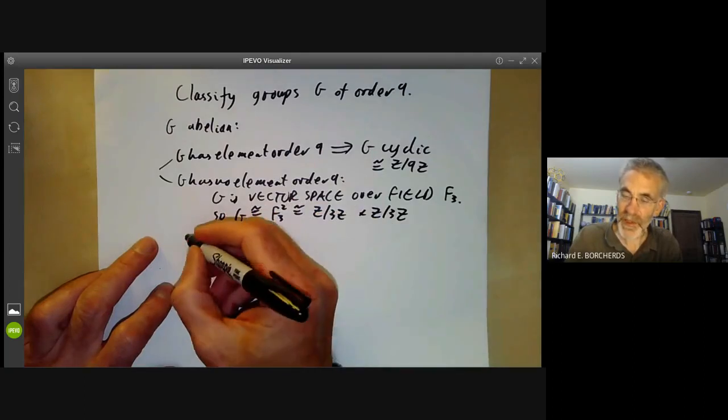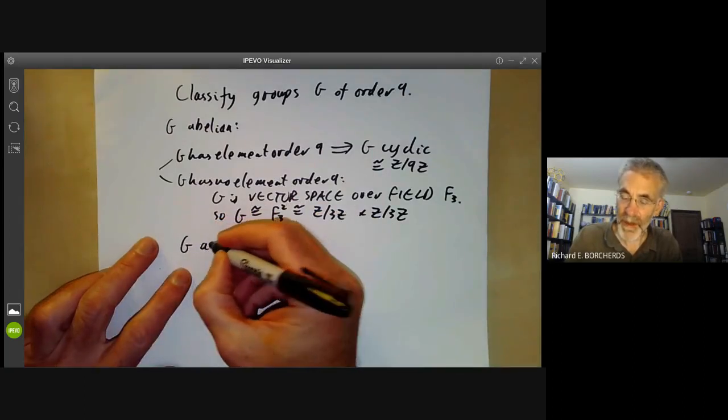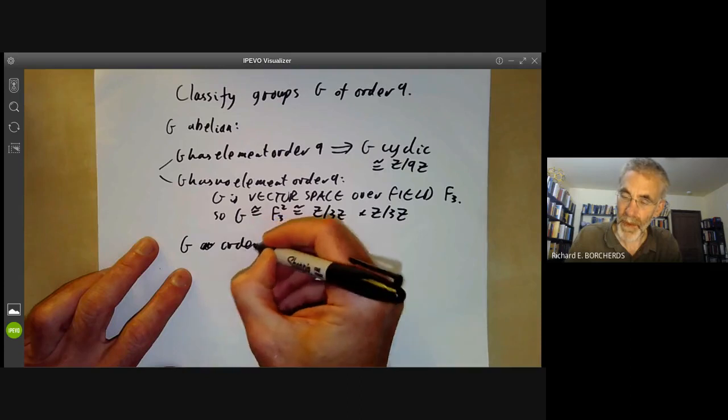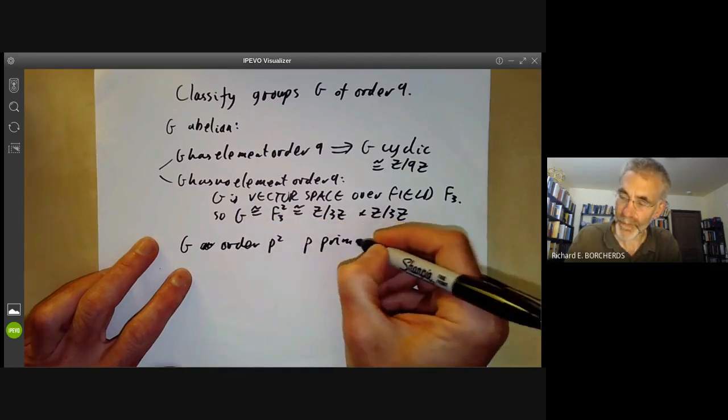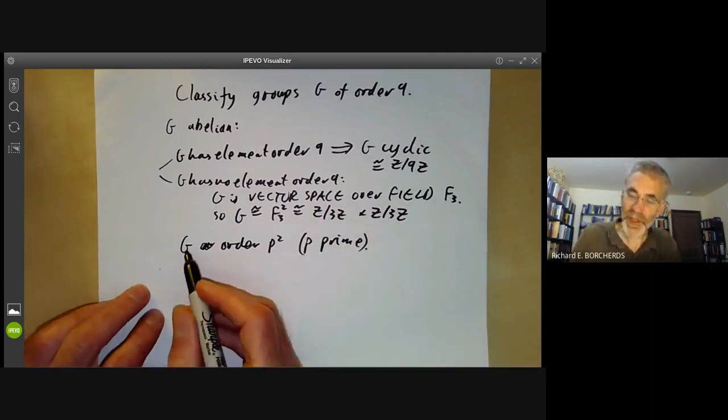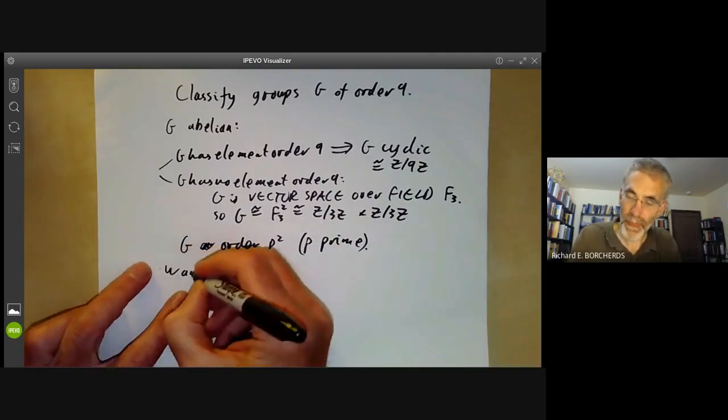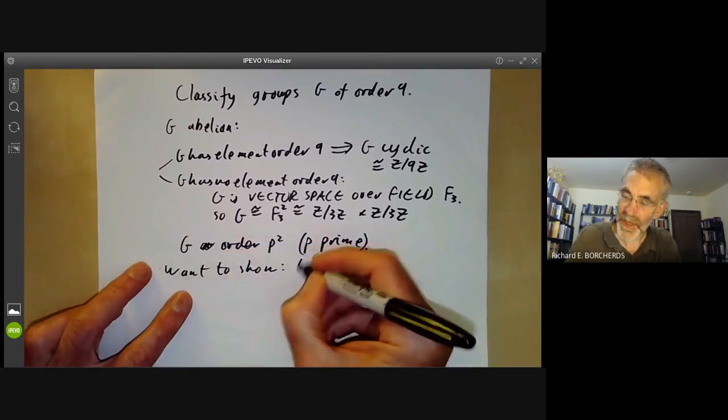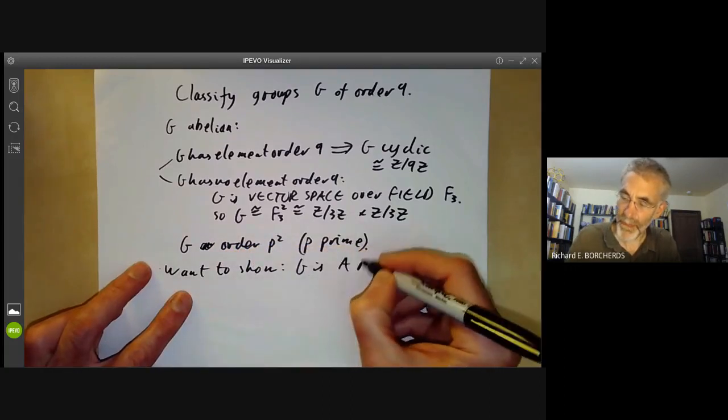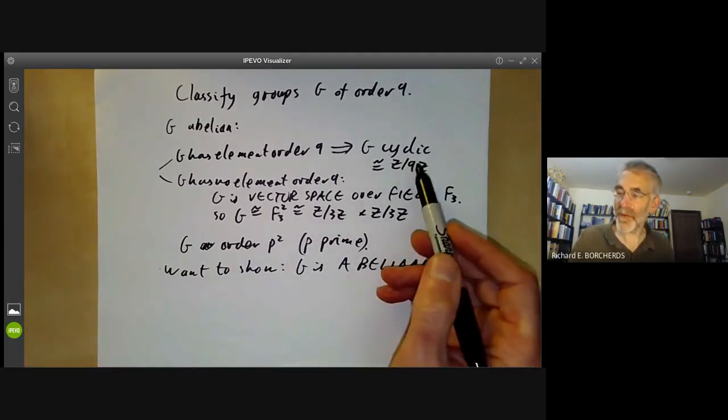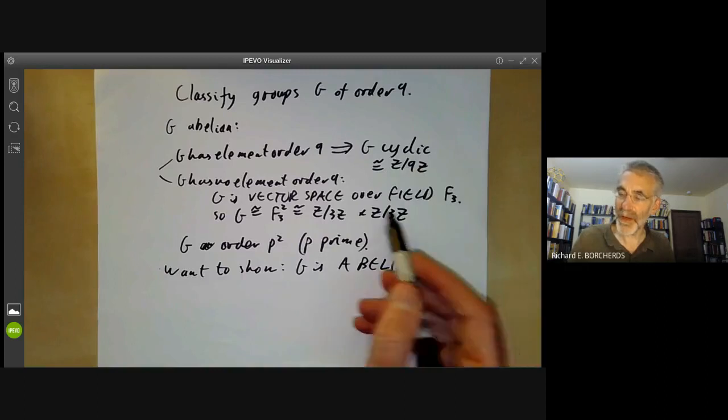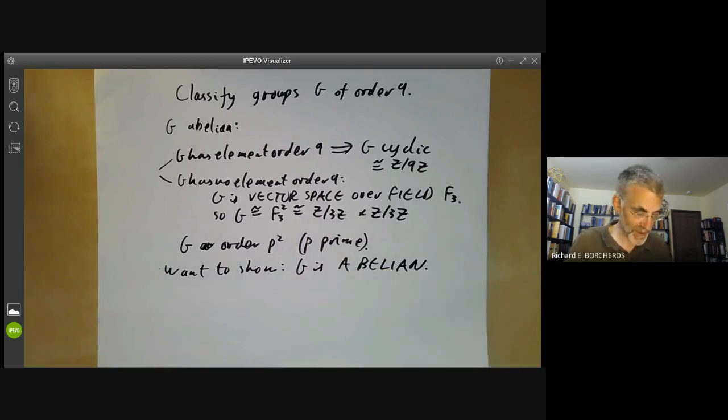So let's just assume that G is actually that G is of order P squared for P prime. So what we want to do is to show that G is abelian, in which case it will be either cyclic of order P squared, or it will be a product of two cyclic groups of order P. So we're going to prove this in two steps.